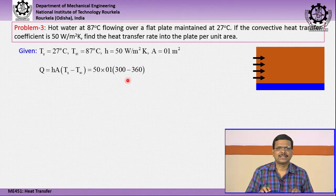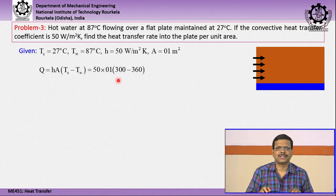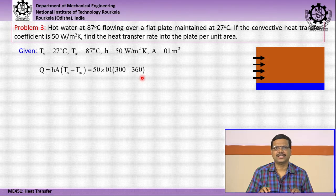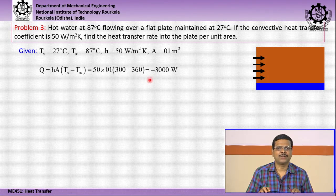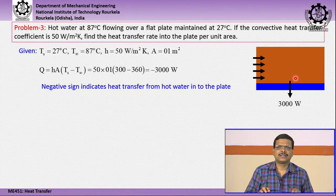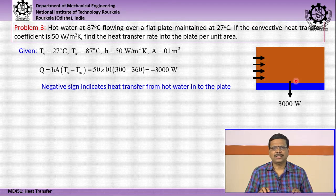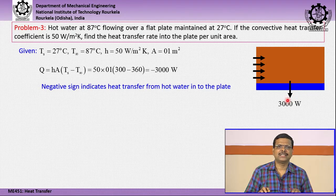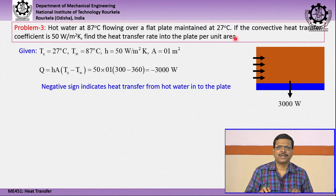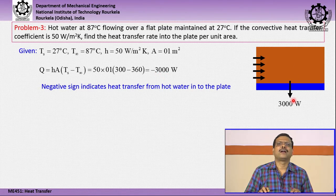With h = 50, Ts = 27°C (300 K), and T∞ = 87°C (360 K), Q = 50·1·(300 − 360) = −3000 W. The negative sign indicates heat transfer is from the fluid into the solid plate, because the water at 87°C is at a higher temperature than the plate at 27°C, so heat flows downward from fluid to solid.